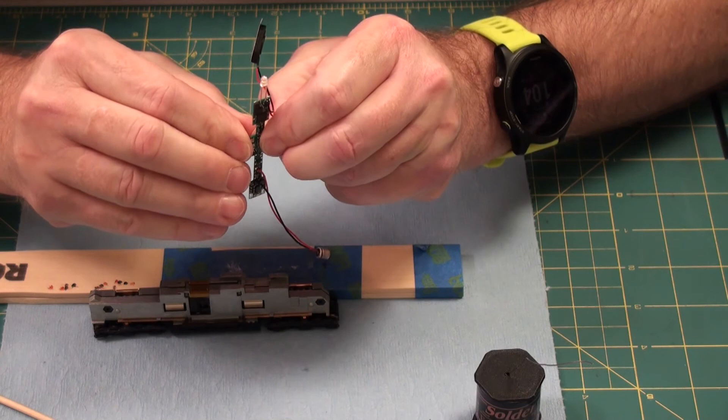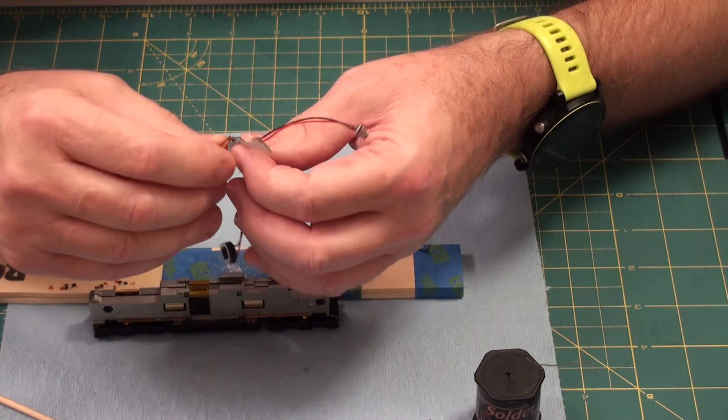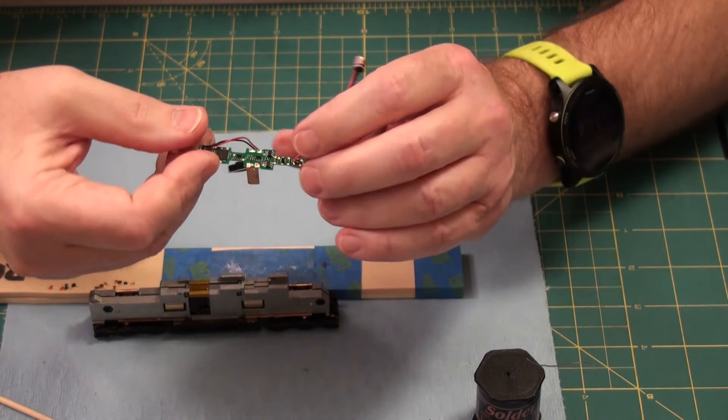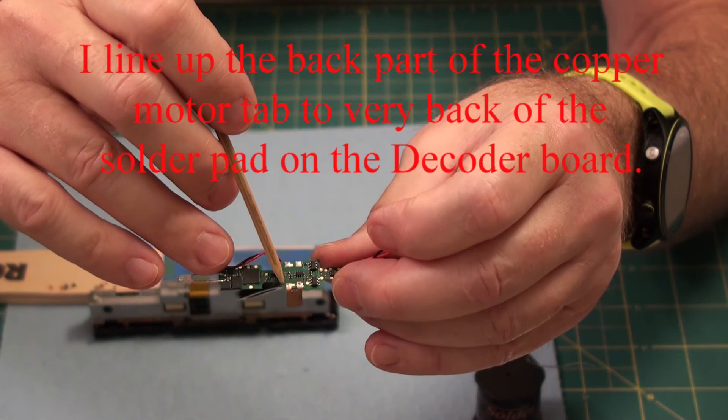So when I do it, I line it up. And it's got a little solder blob on. Let me just do the other one here for now. There. You may not be able to see that, but I line that up right at the back edge of that. So that the back part of that contact is along that back edge there.